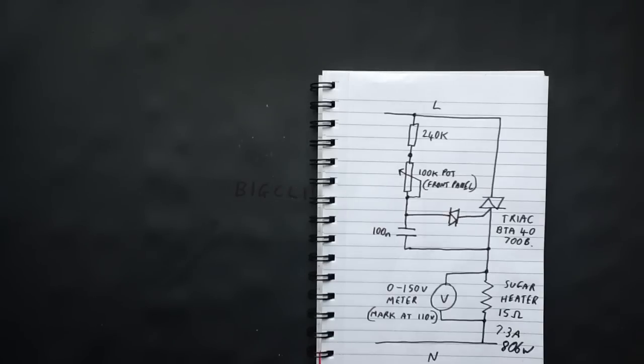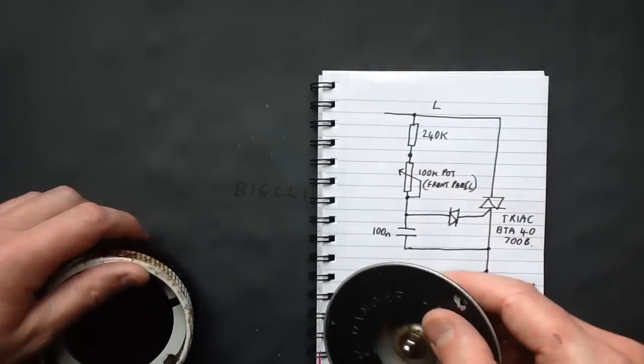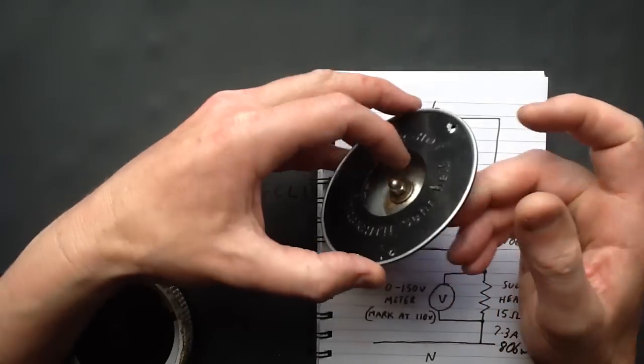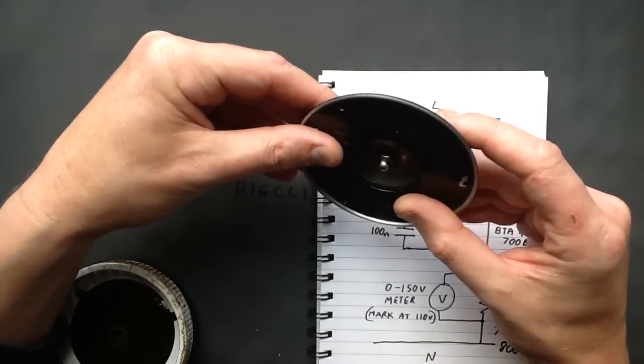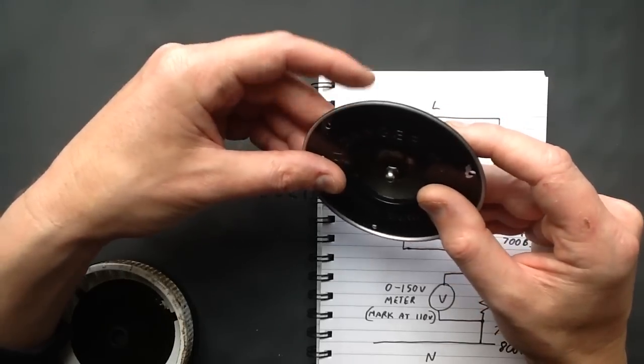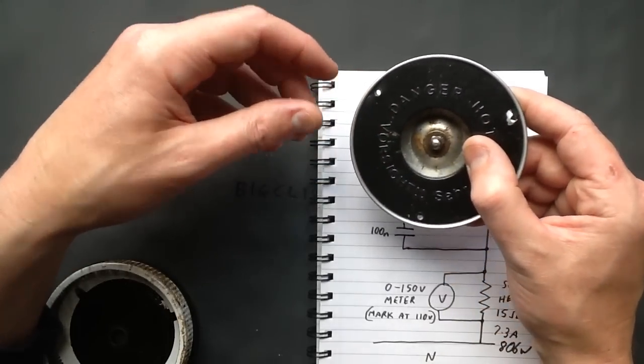But, there you go, the candy floss machines. They're quite interesting. They do gas ones as well, which I think are the indirect heated ones, basically a little burner underneath. I've never actually opened a gas one, but the gas ones are amazing. They just bang the candy floss out at quite incredible speed.